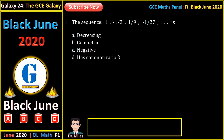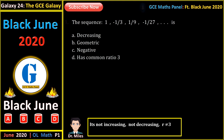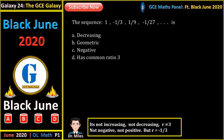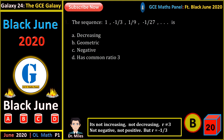The sequence shown — we note it is not increasing; it is alternating positive, negative, positive, negative. So it is neither increasing nor decreasing. The ratio is not 3. This sequence is not all negative or all positive. The ratio when we divide is minus 1 on 3. However, it is geometric. So this is a geometric sequence.